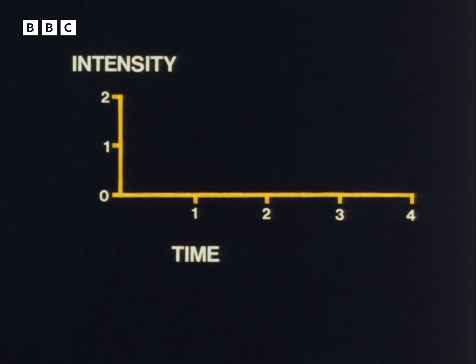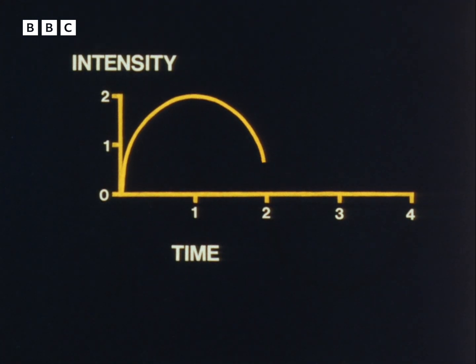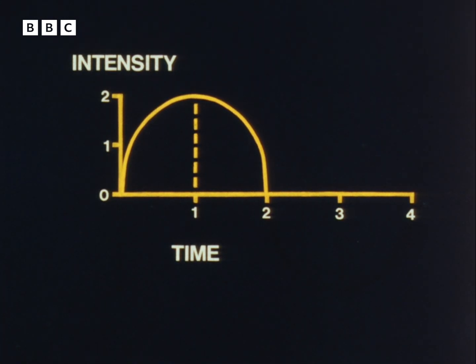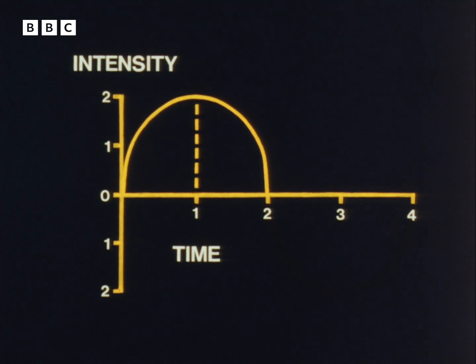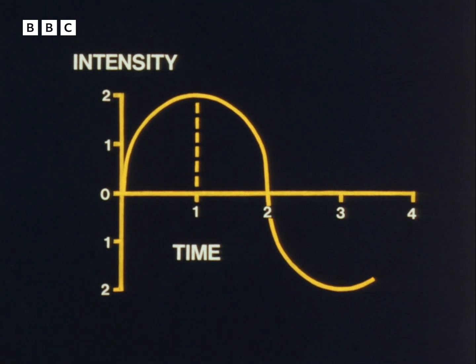The line starts at naught seconds and no intensity, builds up to a maximum intensity at one on the timeline, and returns to zero intensity at two on the timeline. If we measure the time in milliseconds — thousandths of a second — the vibration has risen and fallen in two milliseconds. Just as a vibrating spring moves out in one direction and back through its central position to the opposite direction, we can continue the graph line downwards to a maximum intensity in the other direction after three milliseconds and back to zero after four milliseconds.